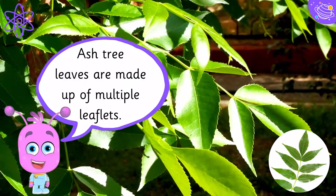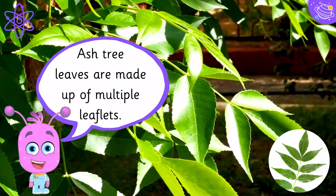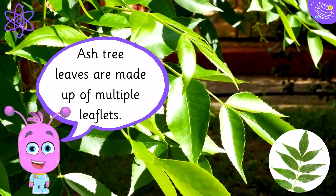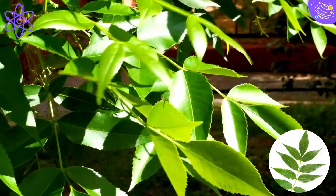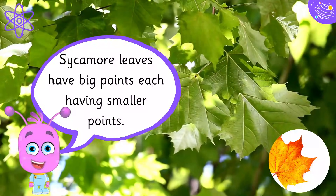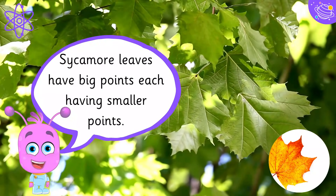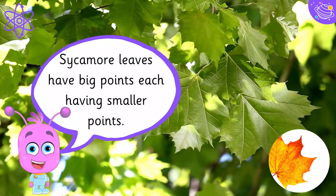Ash tree leaves are made up of multiple leaflets. The leaflets are arranged in opposite pairs, except for the one at the end. Sycamore leaves have big points, each having smaller points.